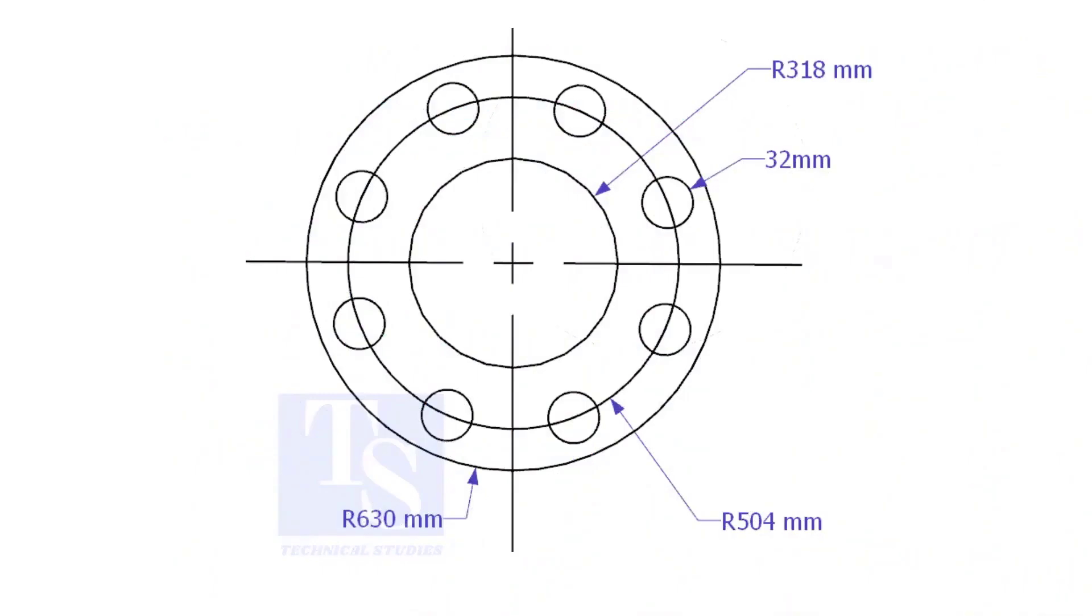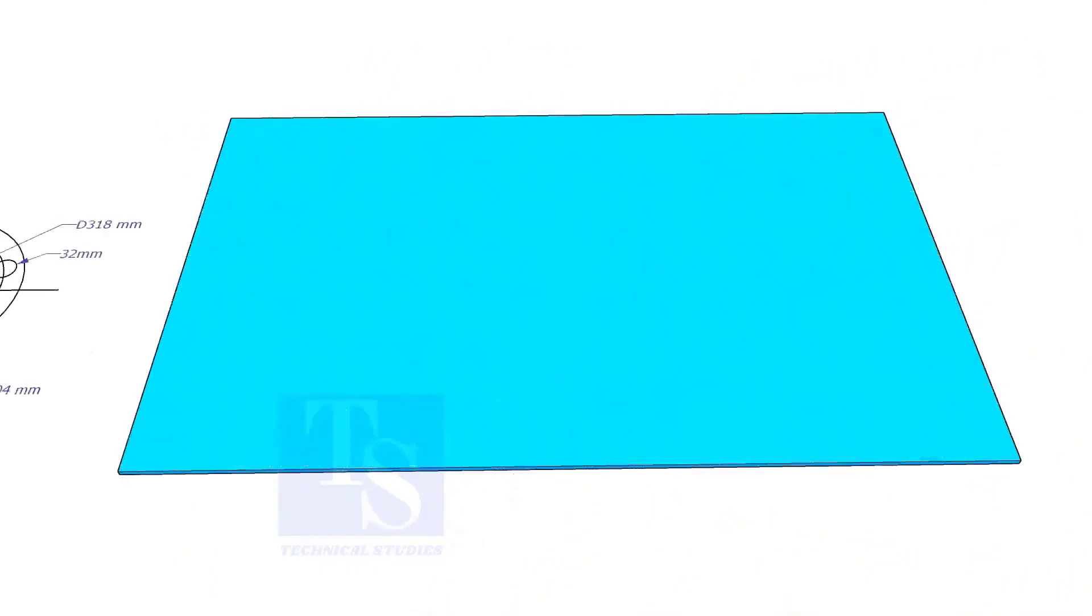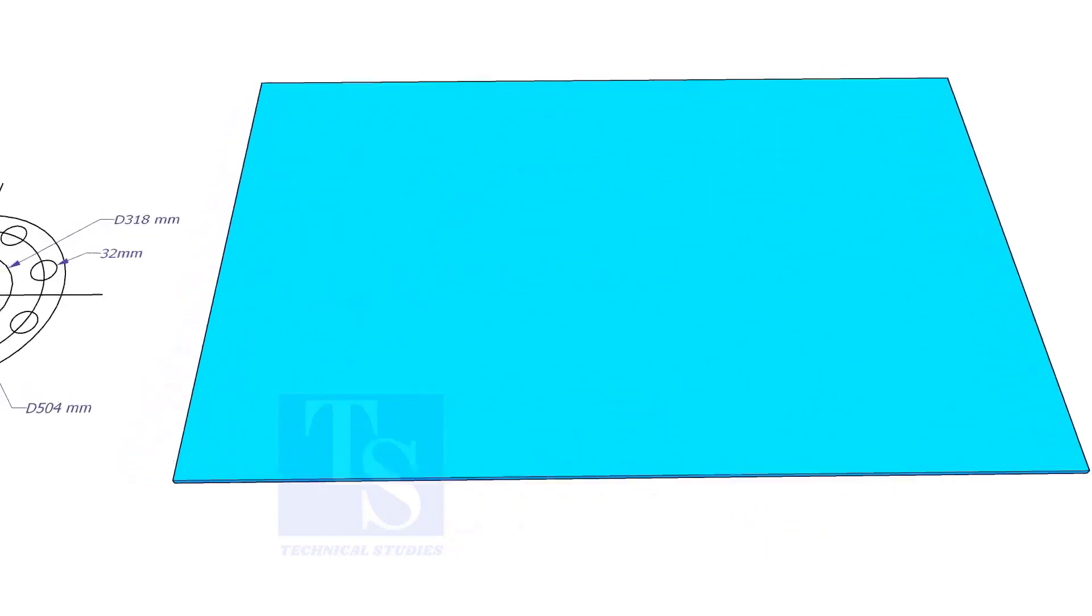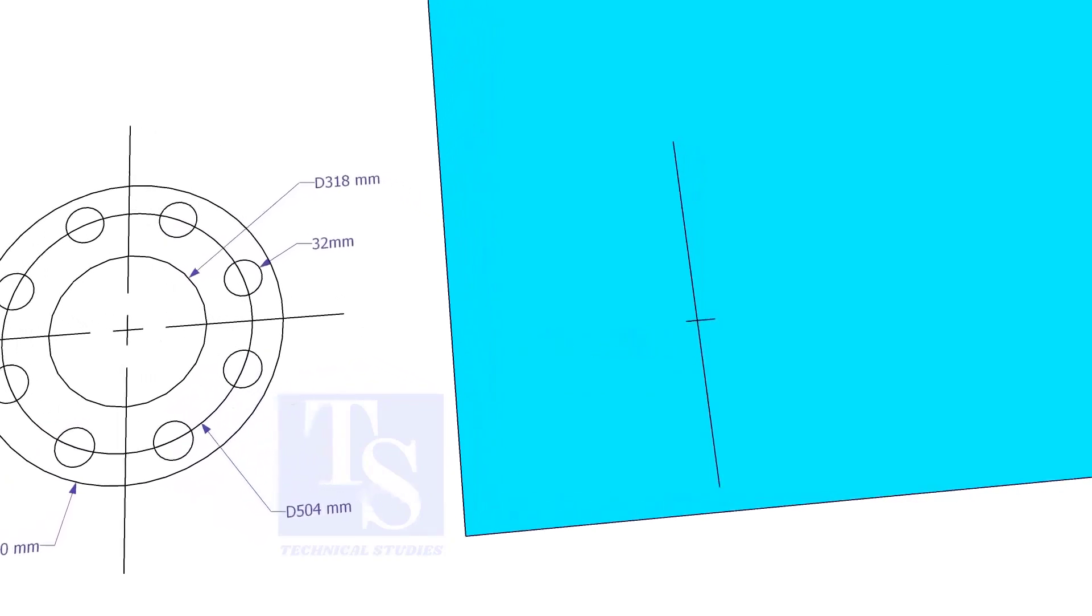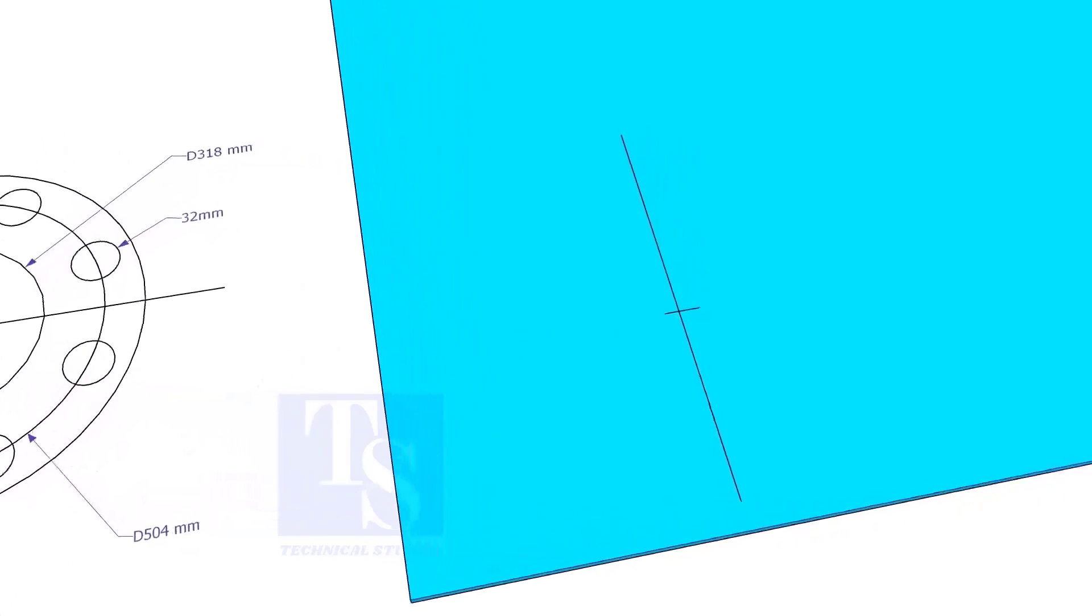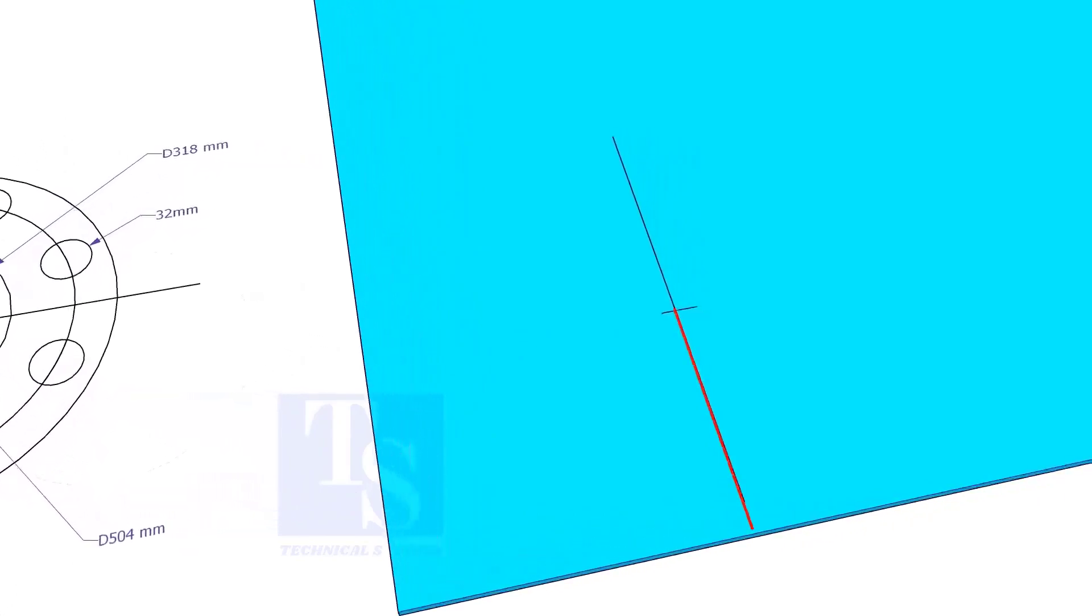Let us mark this flange. Draw a line 10 millimeters more than the half OD of the flange from the edge of the plate. Cut this line marking half OD plus 10 millimeters. Punch mark this center.